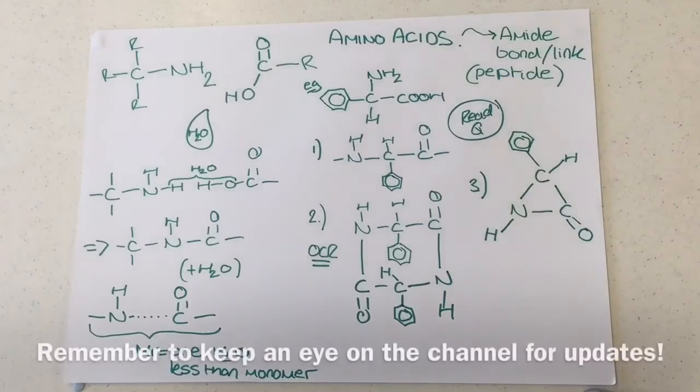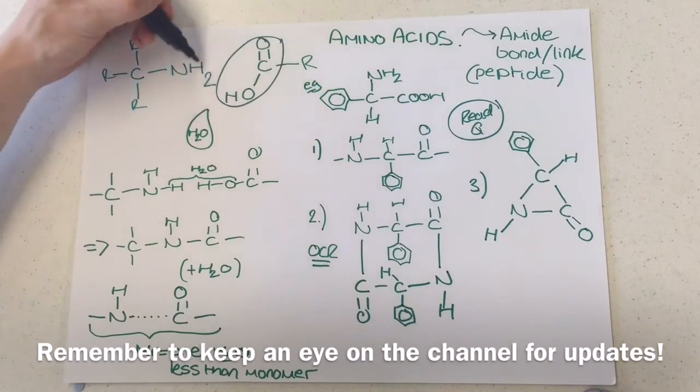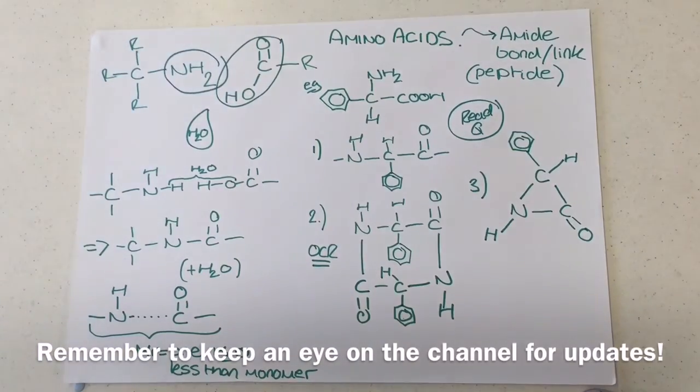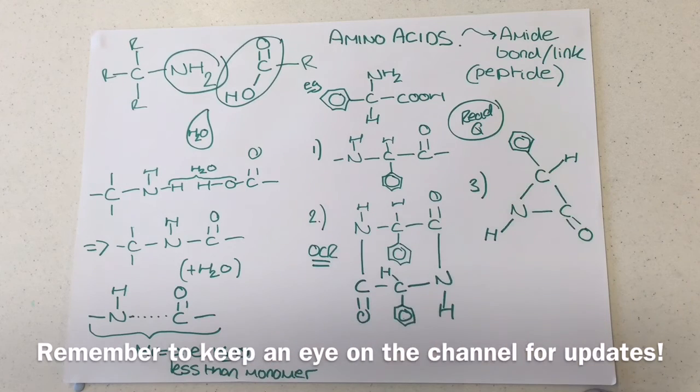I hope that clears up any questions you have, or any confusion you have, around how these two functional groups, so our amino acid, and its two functional groups, so the NH2 and the carboxylic acid group, how they can form an amide bond, or a peptide bond, or an amide link, however you want to describe it, and how we can have alternatives based on a repeating unit, two of them connecting together, or one of them forming a sort of weird ring structure. Make sure you watch the rest of the playlist, and happy revising.